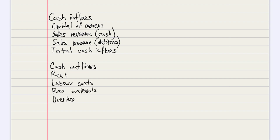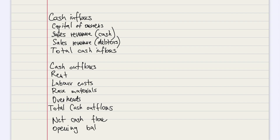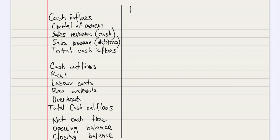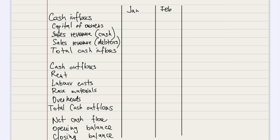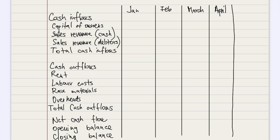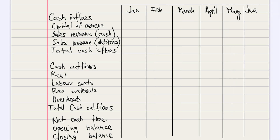Then another heading would be the cash outflows. We list all the cash outflows: rent, labor costs, raw materials, and overheads. At the bottom, it's important to write net cash flows, the opening balance, and closing balance. Then we write the months that we need to prepare the cash flow forecast for.